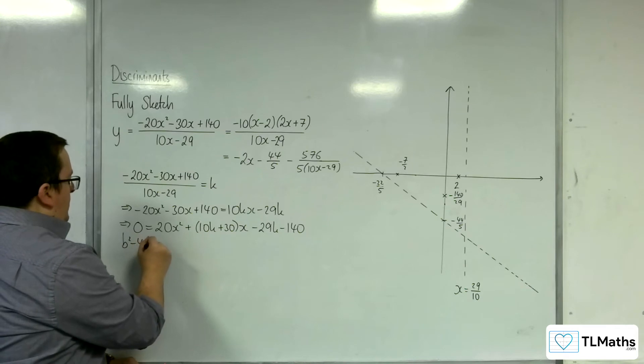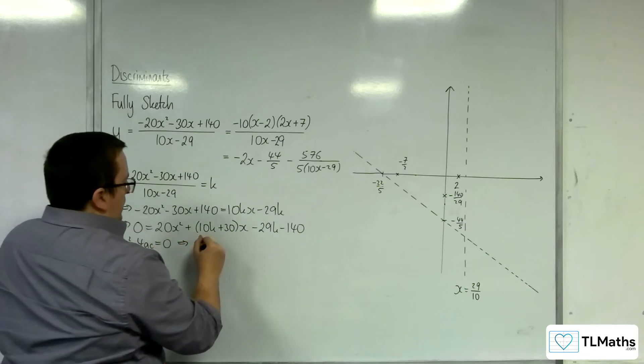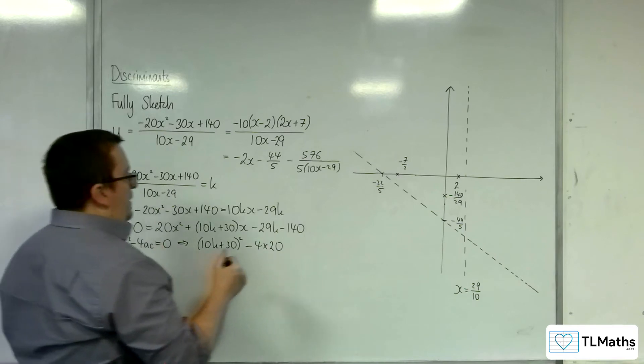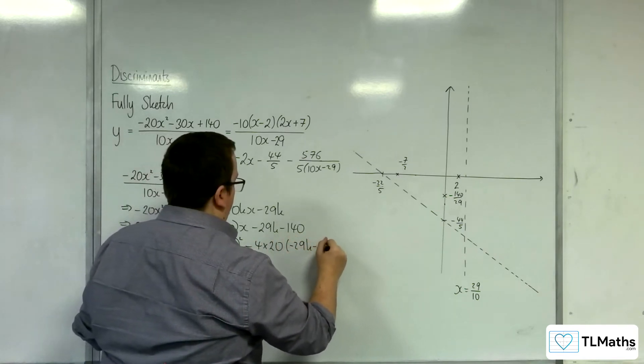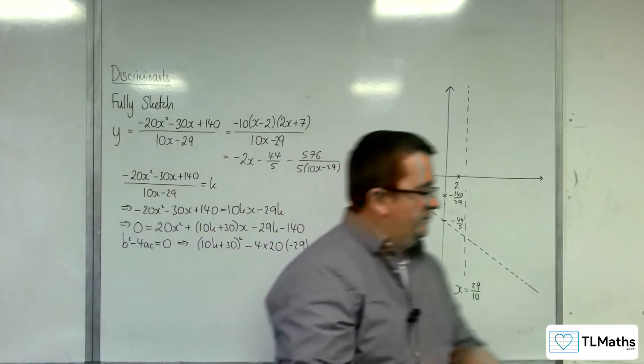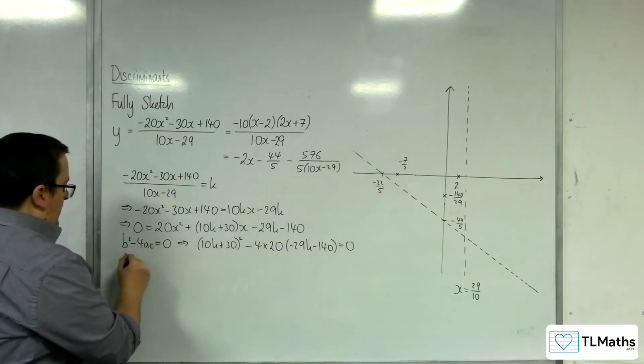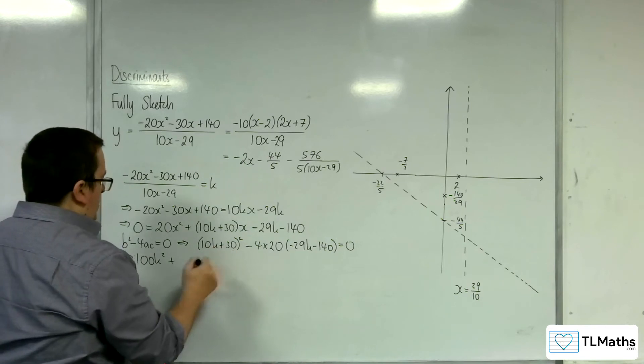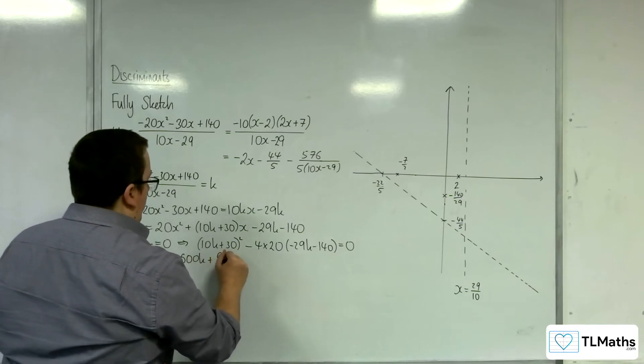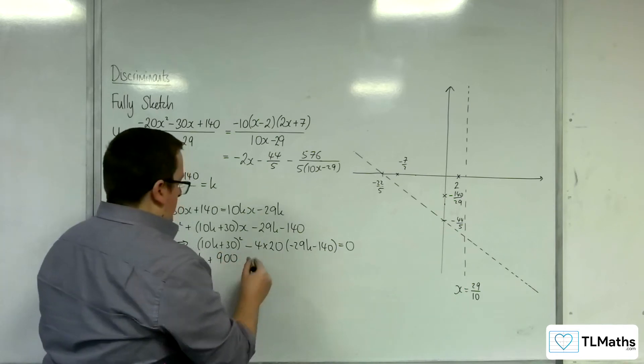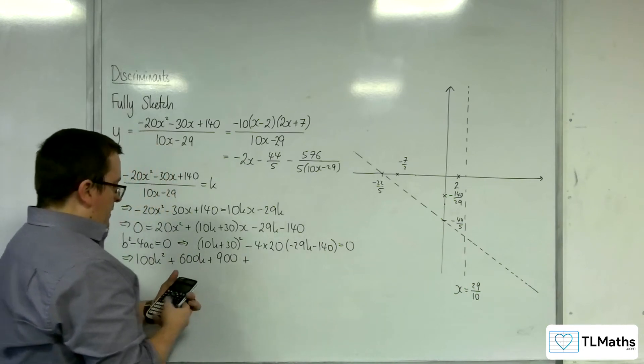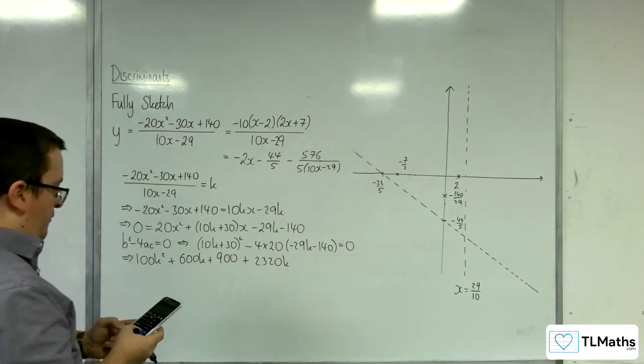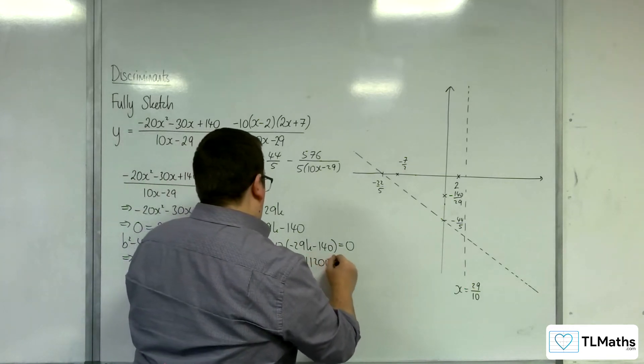For stationary points, I need the discriminant to be equal to 0. So, 10k plus 30 all squared take away 4 lots of A times by C has got to be equal to 0. We're going to have 100k squared plus 600k plus 900. Then, plus 4 times 20 times 29, so 2,320k, and then 4 times 20 times 140, so plus 11,200 equals 0.